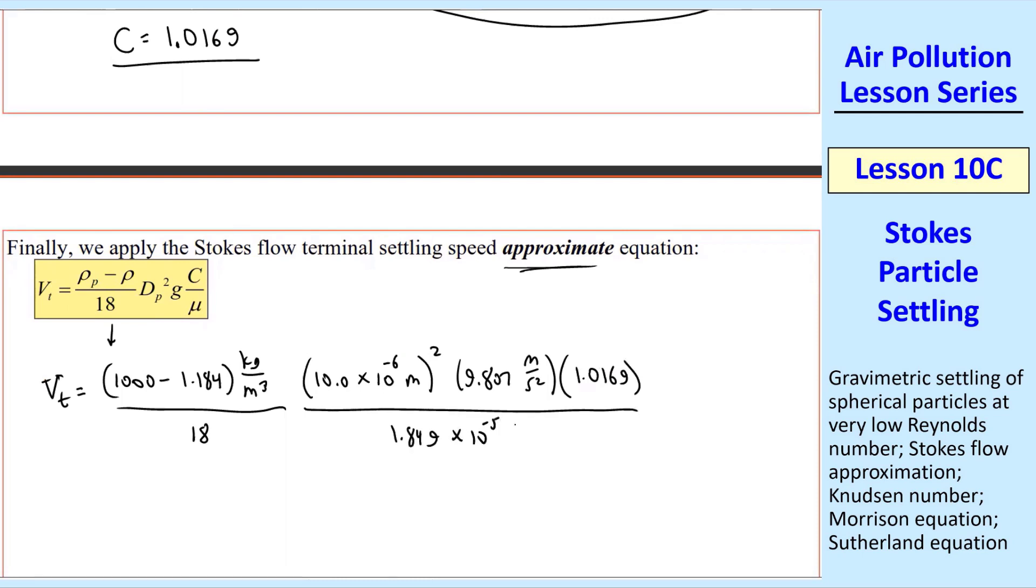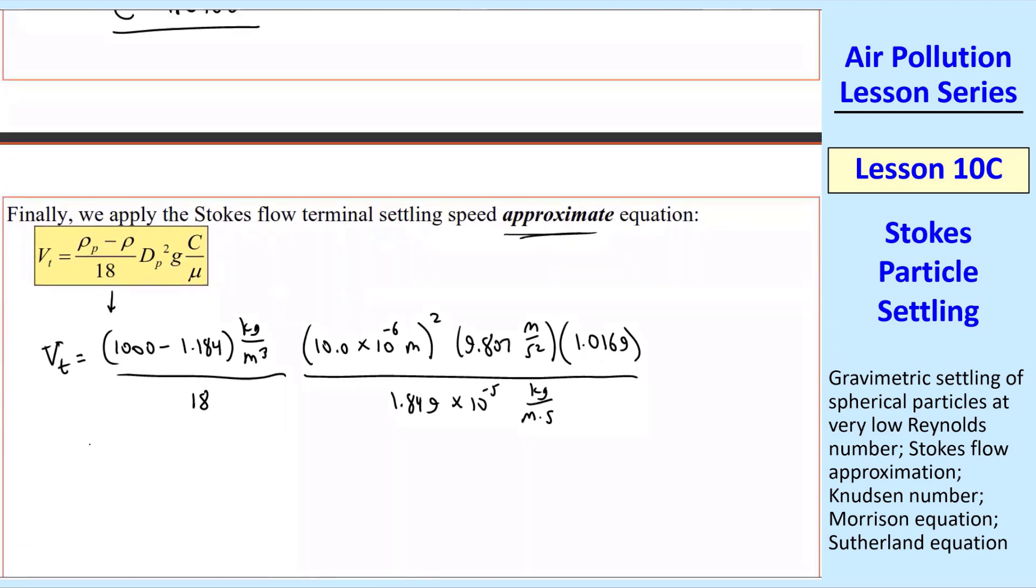And then there's a mu at the bottom, 1.849 times 10 to the minus 5th kilogram per meter second. Work out all the units. They turn out to be meters per second. And if you plug this into your calculator,